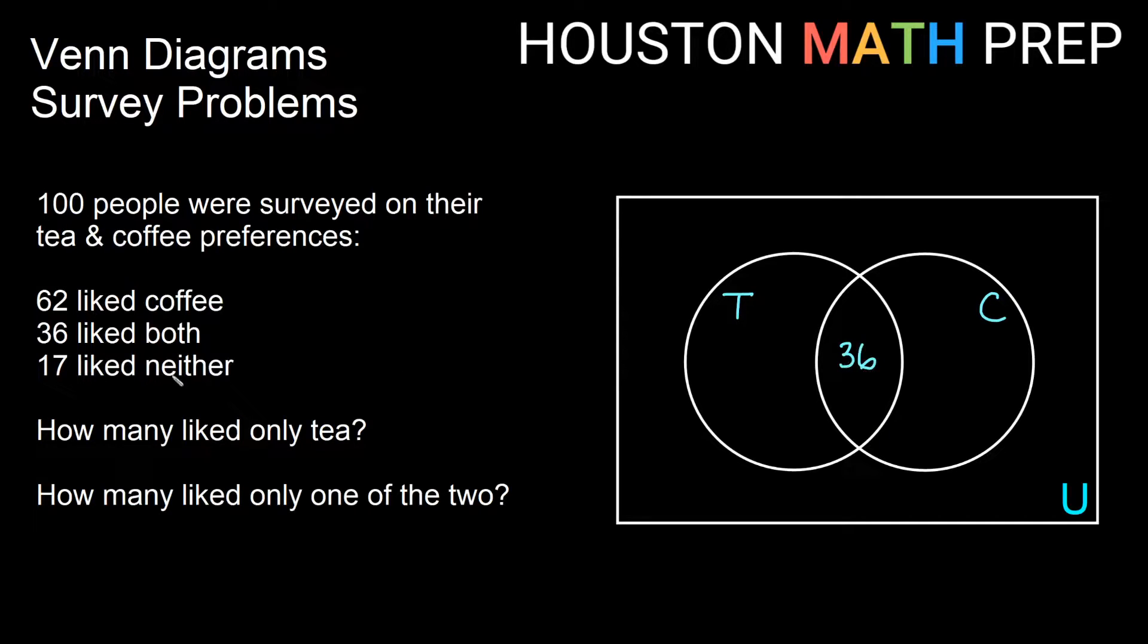And then 17 liked neither. Neither means I'm not in the tea circle and I'm not in the C circle. That must mean I am outside of all the circles. So 17 is my number that goes down here just in my universal set. So now we want to go back and see, can we use this 62 liked coffee? We already used the 36 like both and we already used 17 like neither.